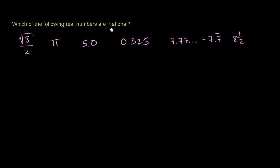Which of the following real numbers are irrational? Well, irrational just means it's not rational. It means that you cannot express it as the ratio of two integers.